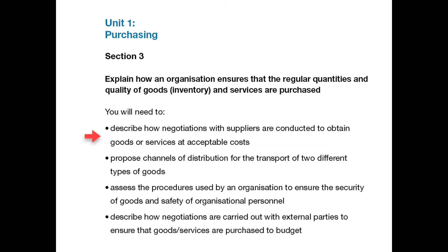You should select two very different types of goods for bullet point 2, such as an e-book or software package, and a computer or a vehicle, and consider the most appropriate distribution channels, bearing in mind that distribution channel includes the organisations involved and the method of transportation.